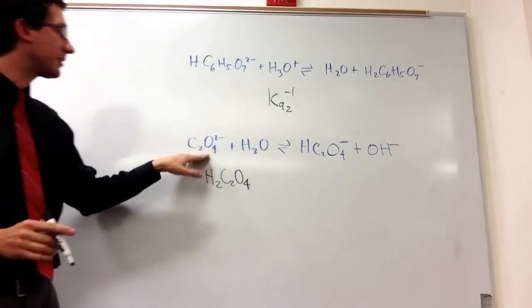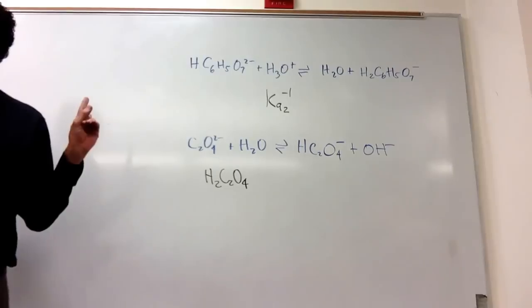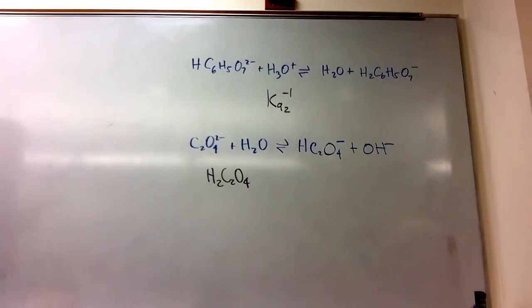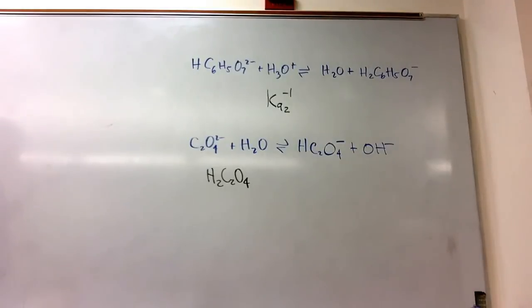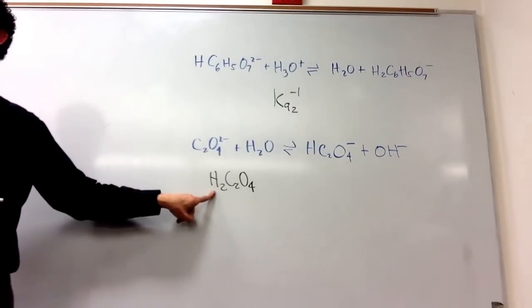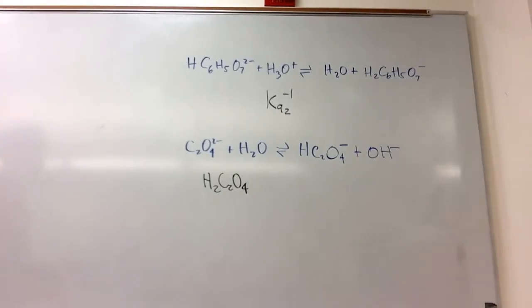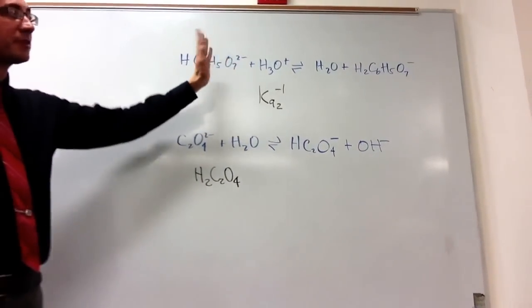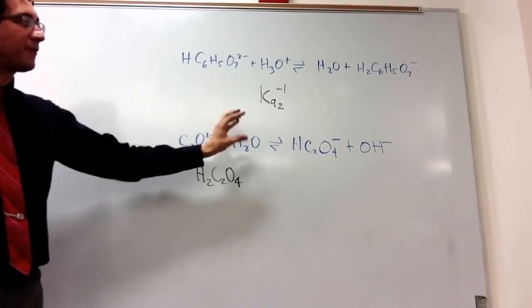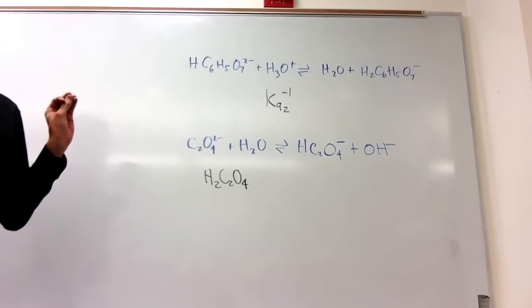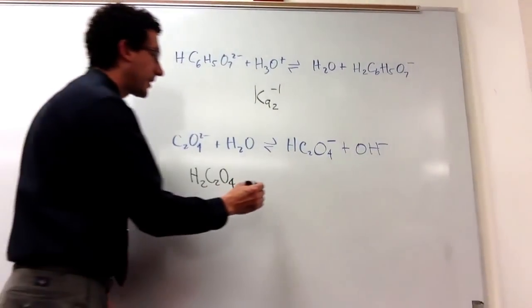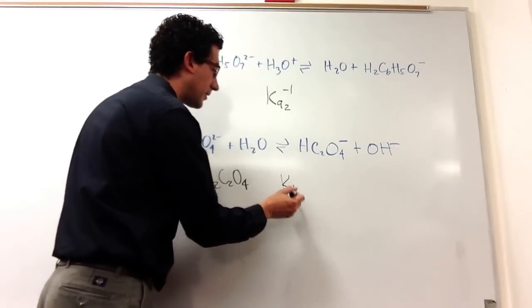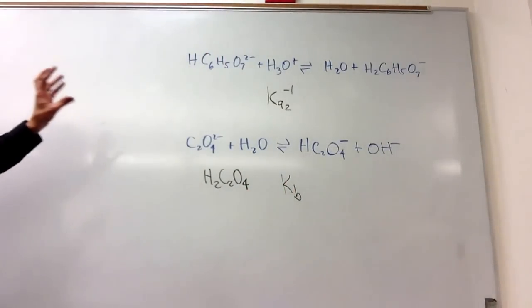One is going from here to here, we're losing one proton. So it's kind of like a KA2, sort of. We're losing the second proton of the two it had originally. But, in contrast to this one up here, which is the reverse of an acid equation, this is the forward of a base equation. So it's a KB. This is actually a KB. Because, you see, it's a base equation.